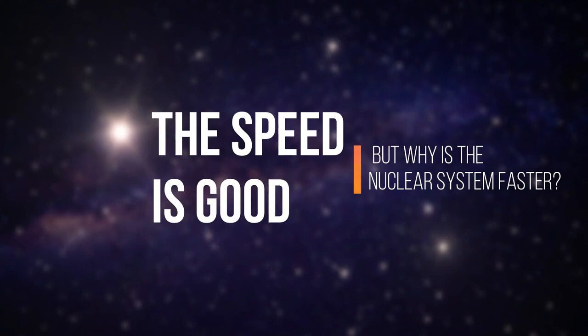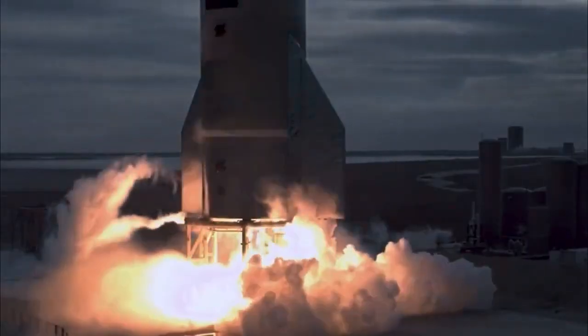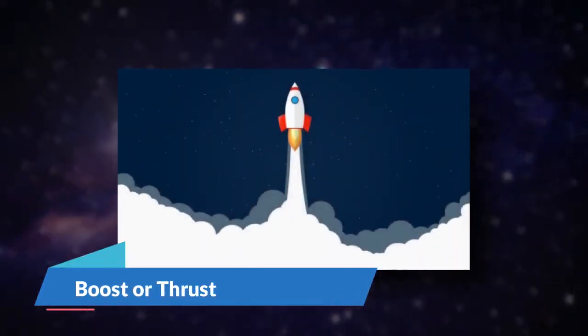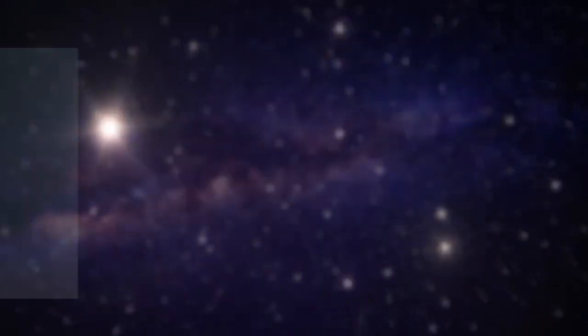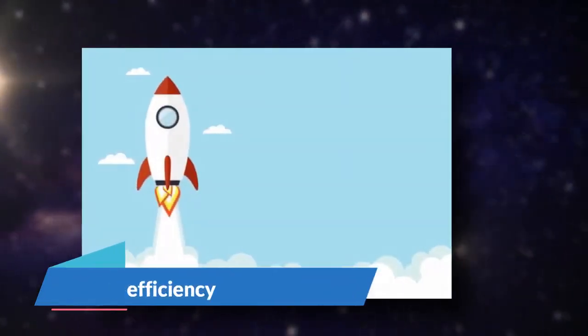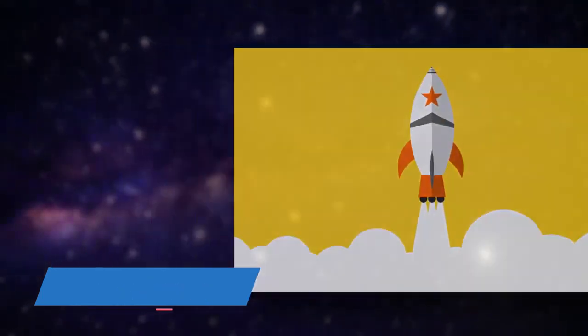The speed is good, but why is the nuclear system faster? Once a ship has escaped Earth's gravity, there are three important things to consider when comparing any propulsion system: boost or thrust, how fast a system can accelerate the ship; mass efficiency, how much thrust the system can produce with a given amount of fuel; and energy density, how much energy a given amount of fuel can produce.